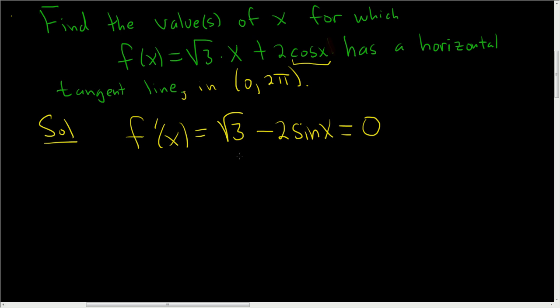If you solve this for sine x, we subtract the square root of 3, so we get negative 2 sine x equals negative square root of 3. And then so sine x is equal to the square root of 3 over 2.